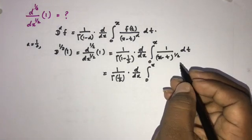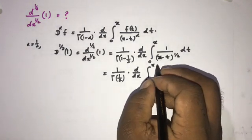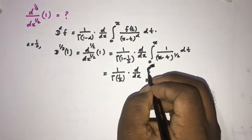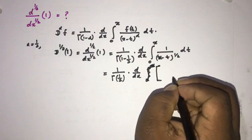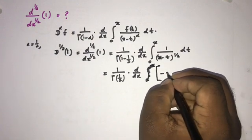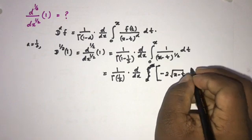1 half. We can take the anti-derivative, so we can write this is equal to minus 2 x minus t